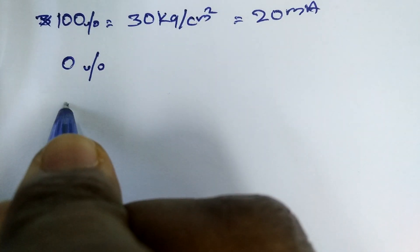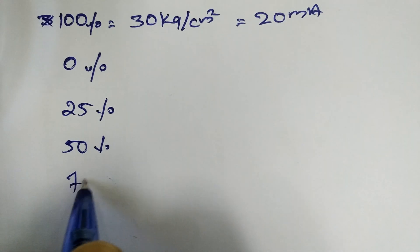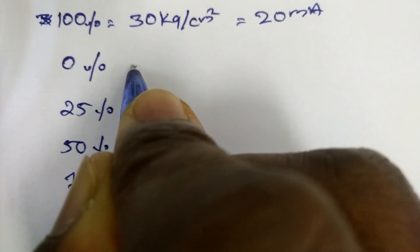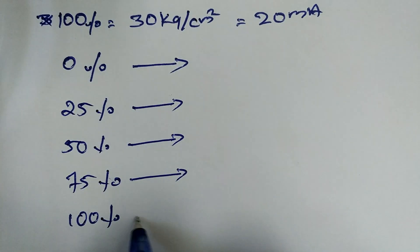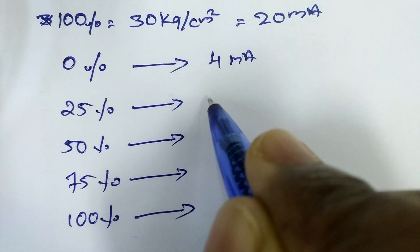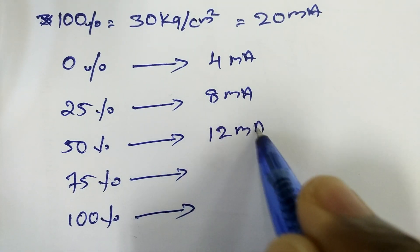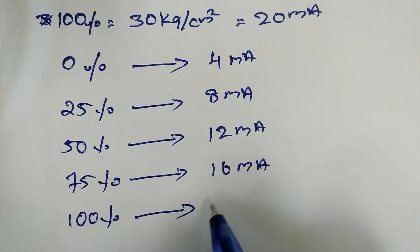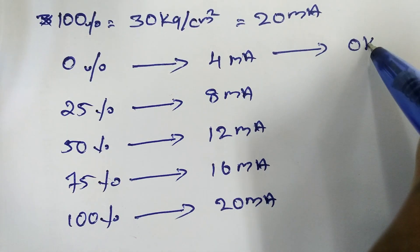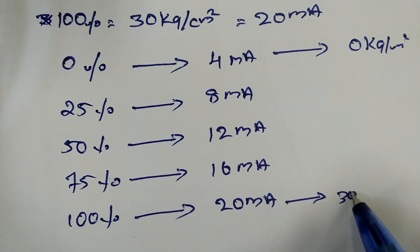We use calibration at 0%, 25%, 50%, 75%, and 100%, with their corresponding milliamp values. These are standard values: 0% = 4 mA, 25% = 8 mA, 50% = 12 mA, 75% = 16 mA, and 100% = 20 mA. The pressure range is 0 to 30 kg per cm².